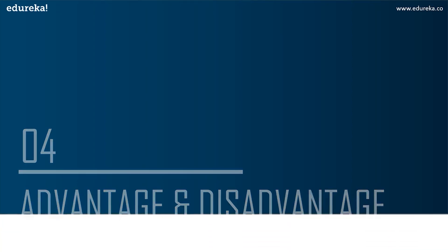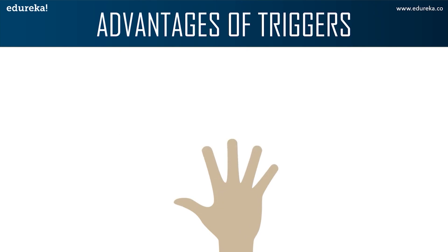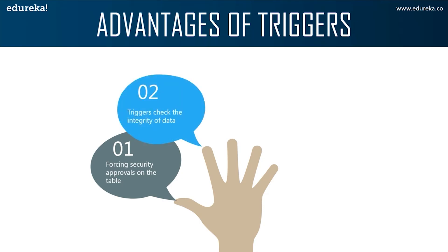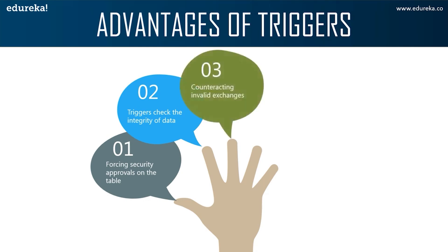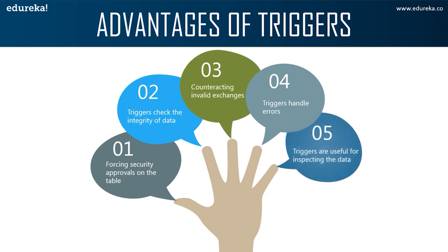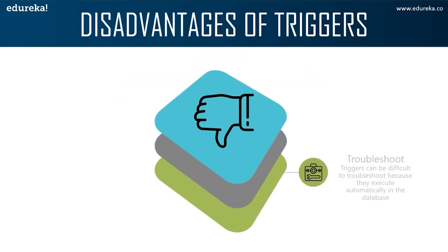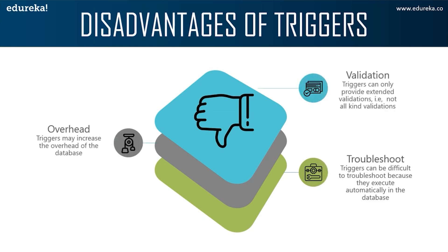The advantages of triggers include: forcing security approvals on tables in the database; providing another way to check data integrity; counteracting invalid transactions; handling errors from the database layer; and inspecting data changes in the table. The disadvantages are: triggers only provide extended validation, not all kinds — simple validations using NOT NULL, UNIQUE, CHECK, and FOREIGN KEY constraints cannot be used in a trigger; triggers may increase database overhead; and triggers can be difficult to troubleshoot because they execute automatically and may not be visible to client applications.